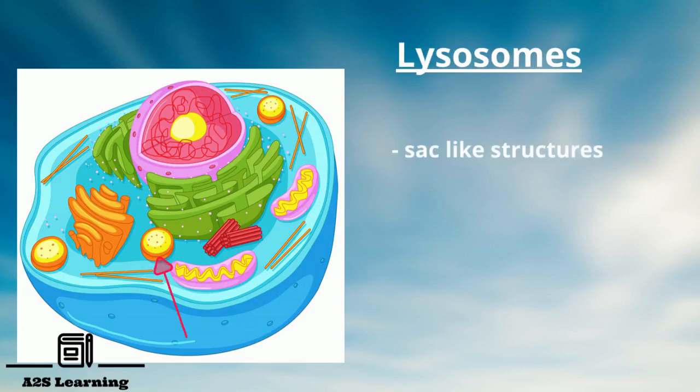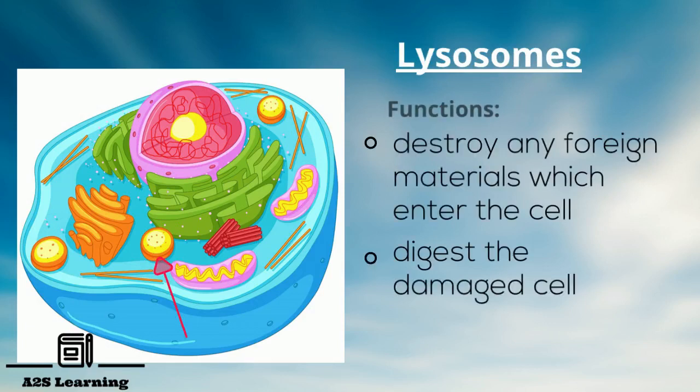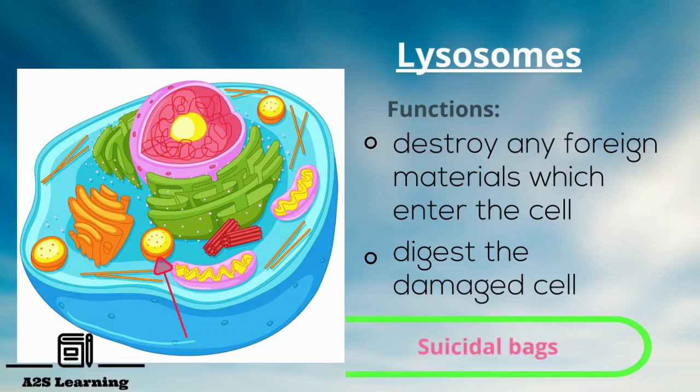Lysosomes: These are sac-like structures containing digestive enzymes. Lysosomes destroy any foreign particles which enter the cell. They even digest the damaged cell. That is why they are called suicidal bags of the cell.